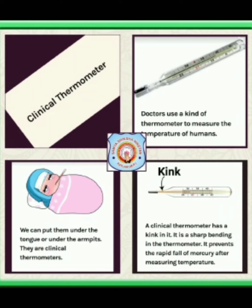In the clinical thermometer, a small kink is present. It helps prevent the mercury in the capillary tube from falling back into the bulb, so that the user can take a proper reading of the temperature. Mercury is present in liquid state, and the kink helps stop it from moving back inside the thermometer.